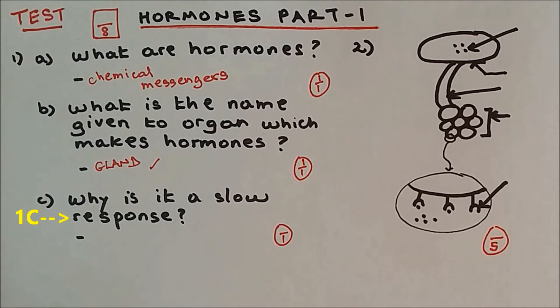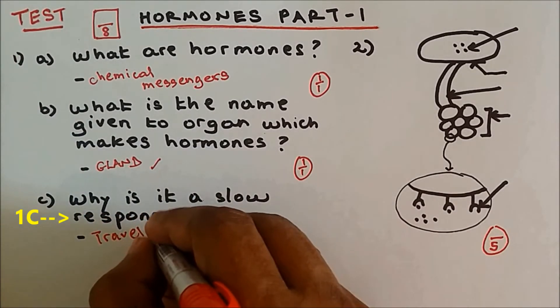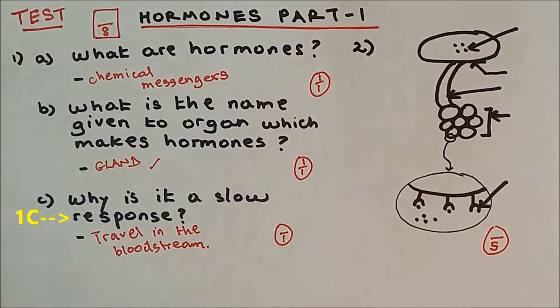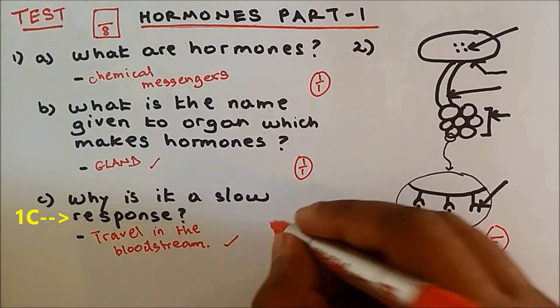Why is it a slow response? Why do hormones take time to act? And the reason is because they're traveling in the bloodstream. So it's very slow compared to the neurons. So the answer is travel in the bloodstream. You got it right. Well done.